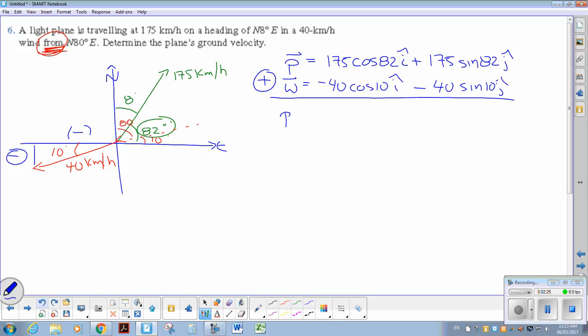Add those vectors together, and I'll get my resultant. So using the calculator, 175 cos 82 plus negative 40 cos 10, and that's negative, negative 15i, approximately.